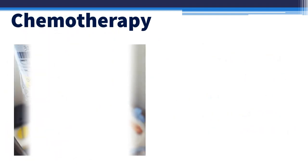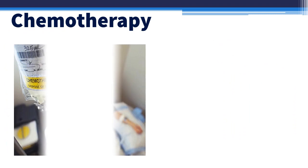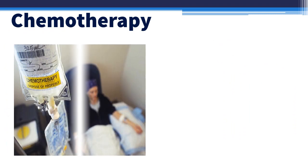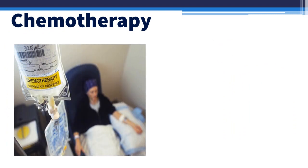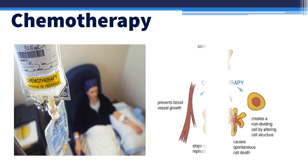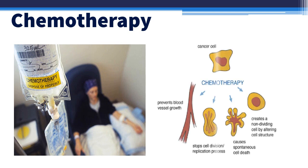Chemotherapy is a cancer treatment that uses drugs to stop the growth of cancer cells, either by killing the cells or by stopping them from dividing. When chemotherapy is taken by mouth or injected into a vein or muscle, the drugs enter the bloodstream and can reach cancer cells throughout the body.